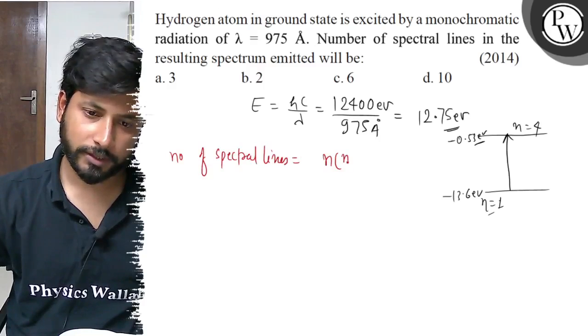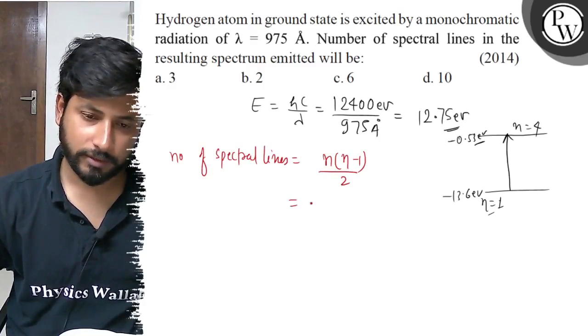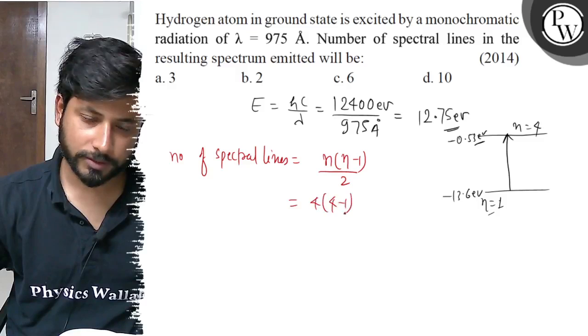n equals to 4 into 4 minus 1 by 2. We have 4 into 3 by 2, that equals to 6.